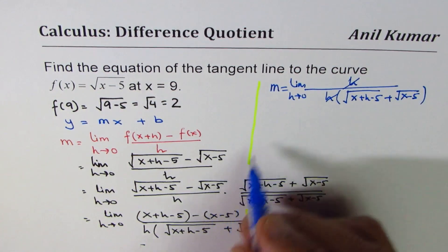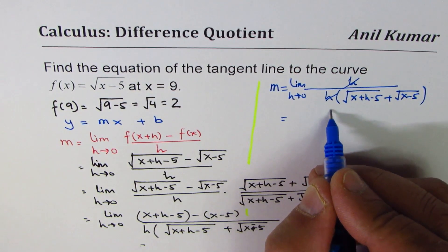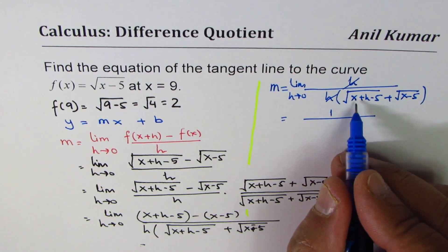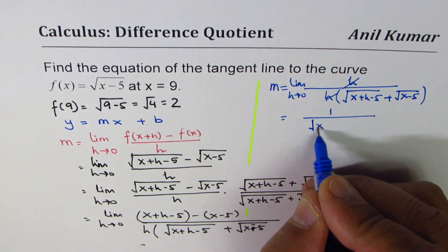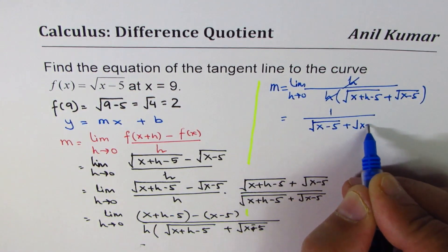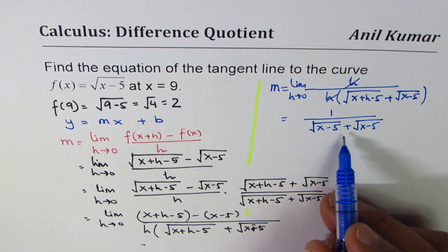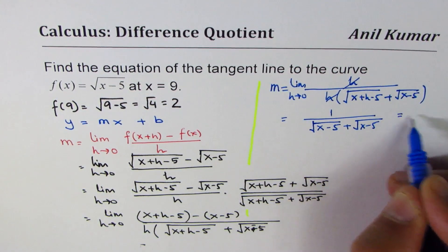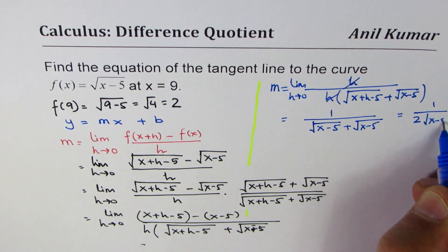Now, h and h cancel. So now we can substitute 0 for h. So we get this as 1 over, if I substitute 0 for h, I get square root of x minus 5 plus square root of x minus 5. So that becomes the slope, which is 1 over 2 square root of x minus 5.